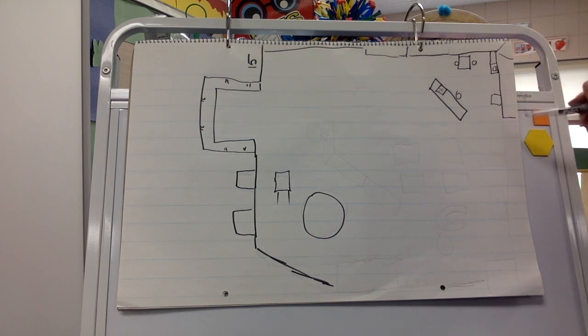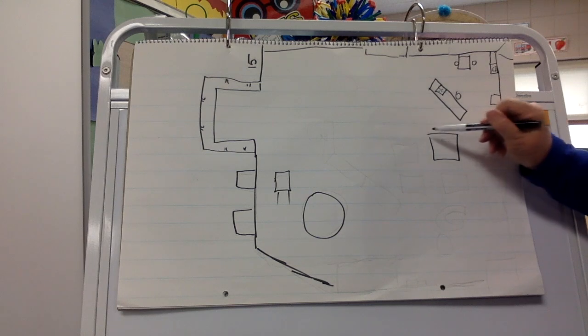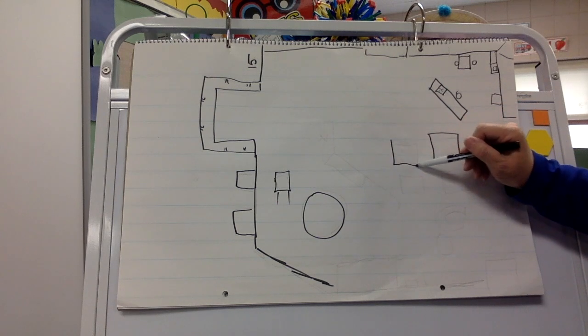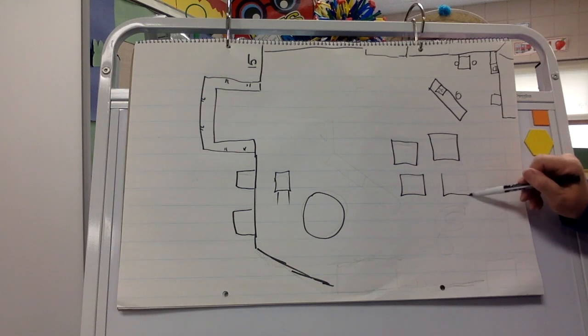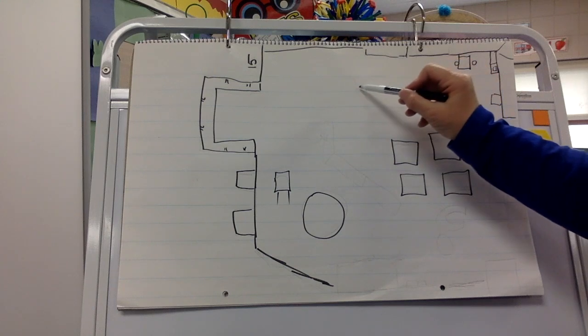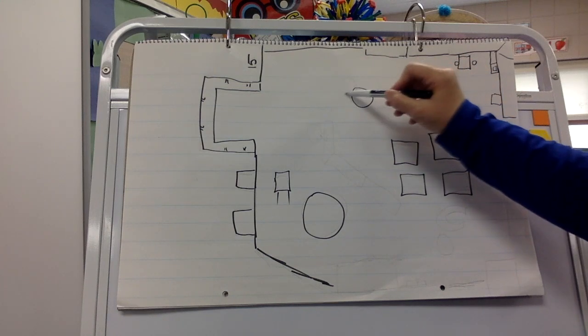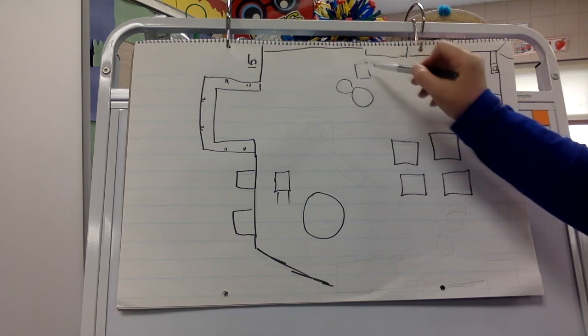And then you come over here, and I'm going to make our tables. Now our tables are trapezoids. Trapezoids are hard for you to make, so I don't even want you to try, because there's two trapezoids put together. We'll just make squares. We have four tables. Here's Mrs. Gustafson's rocking chair.